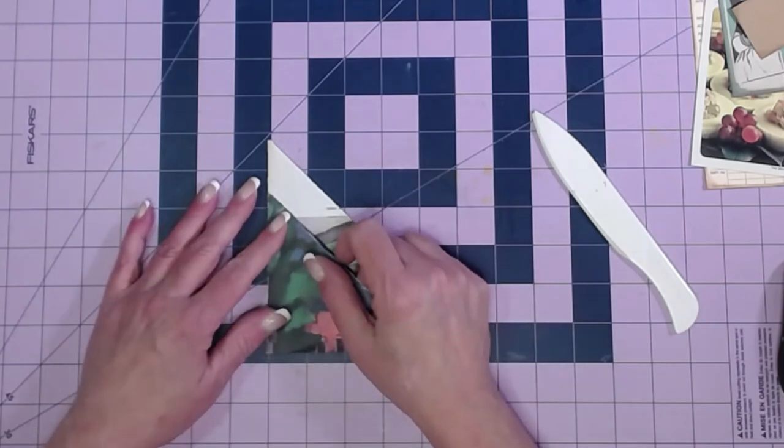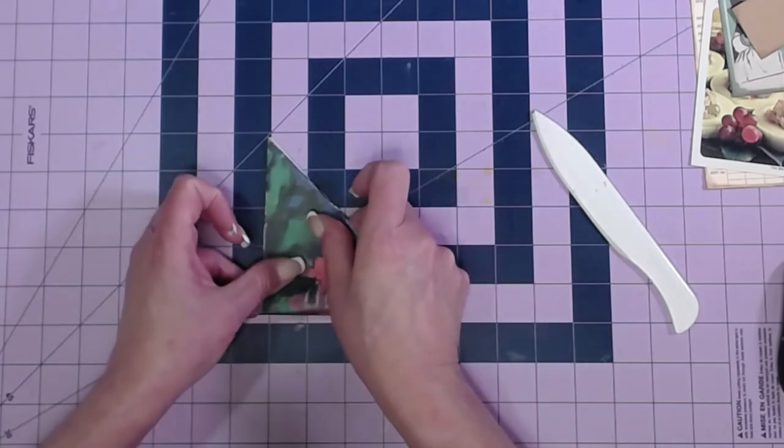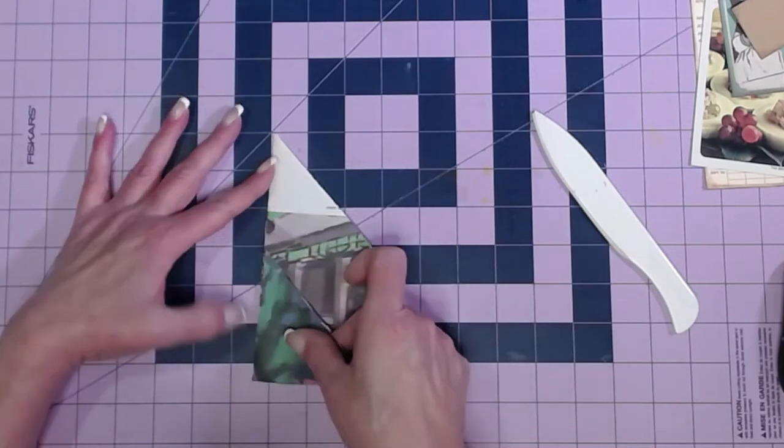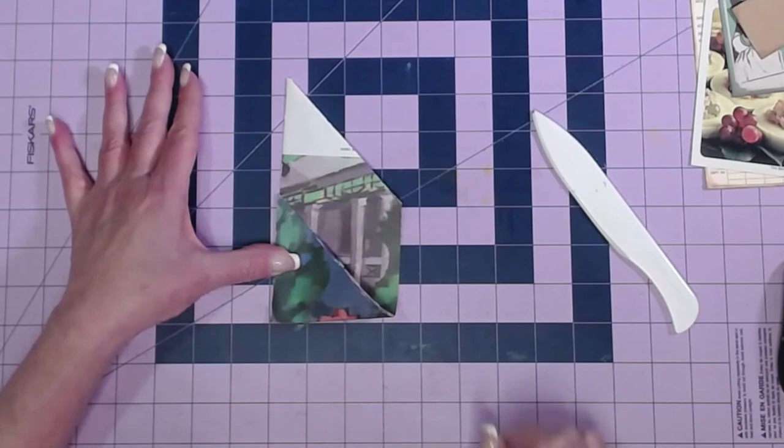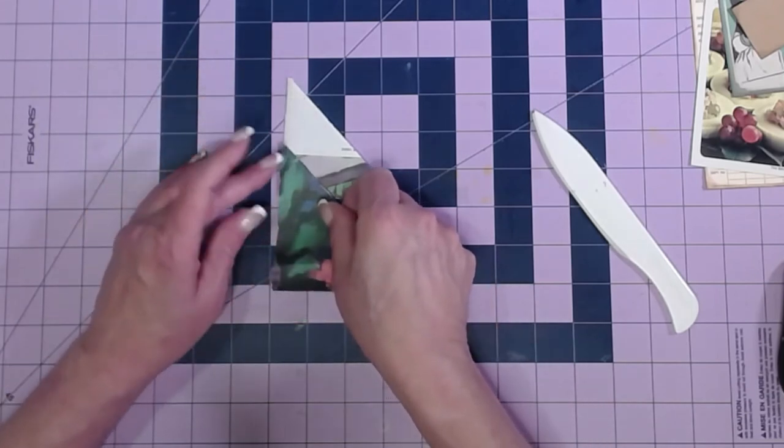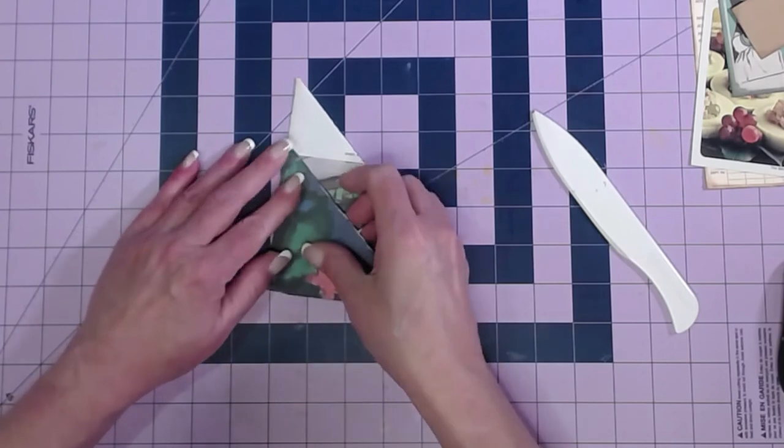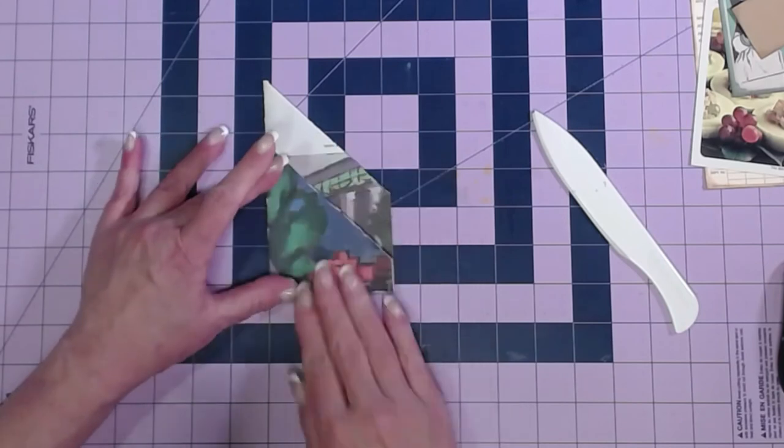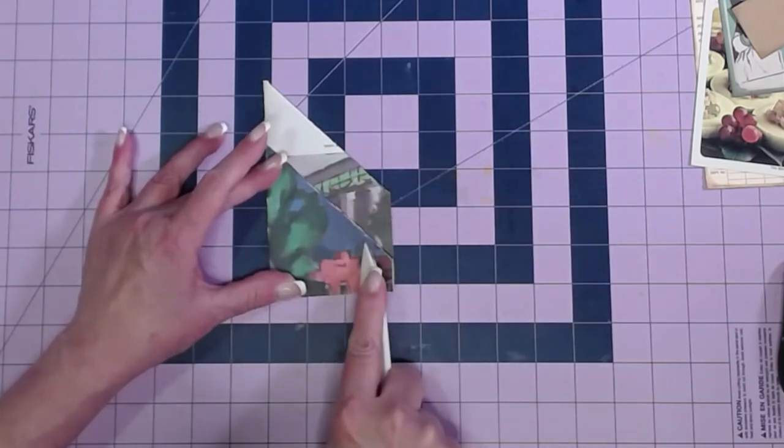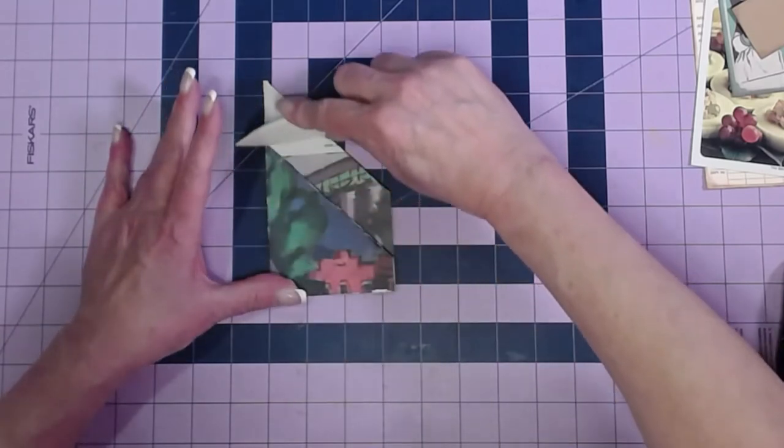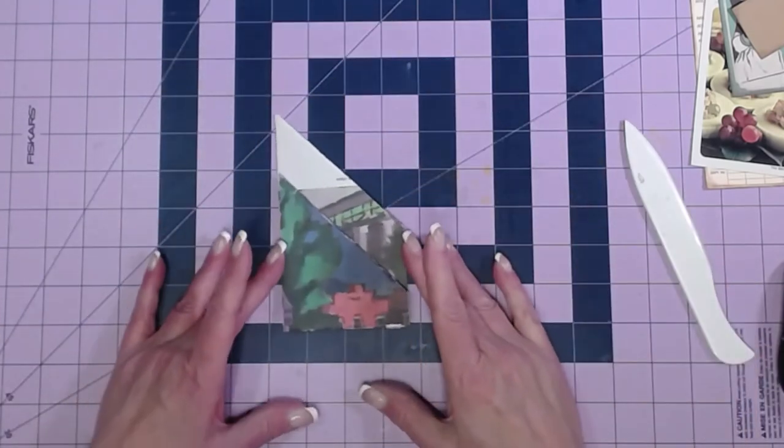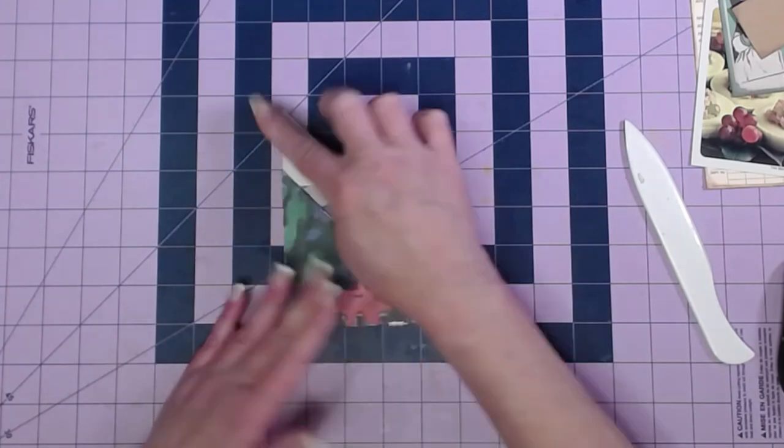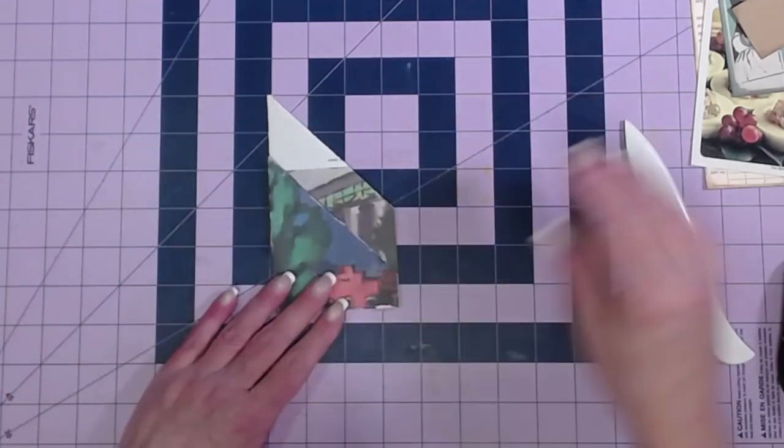And so then you just decide how big you want each of your pockets, tucks, that. You could go all the way up, but then that would sort of defeat the purpose of seeing all the different pieces. You could go really short like this, but I'm going to kind of go in the middle-ish like this. And that is that.